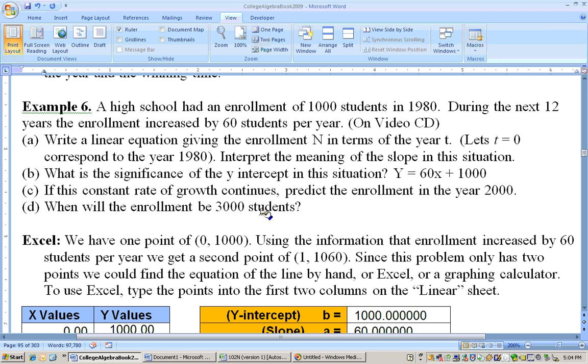If it says, when will the enrollment be 3,000 students, well, this is my number of enrollment right here. So, the other variable we could use instead of y is n for number of enrollment instead of x. We could use t here for time. So, put the 3,000 in here, and we'd have to solve it. Subtract off the 1,000, and you'd get 2,000 equals 60t. And then to finish it off, divide both sides by 60. And when you do that, you would get about 33.33 for t, and that means 33.33 years after 1980, the population of this school was supposed to be 3,000 students.